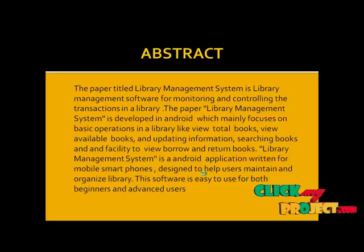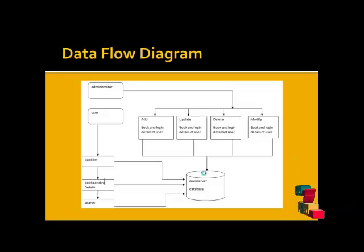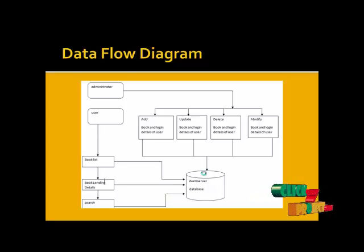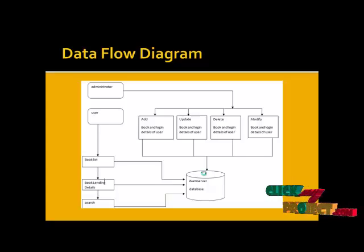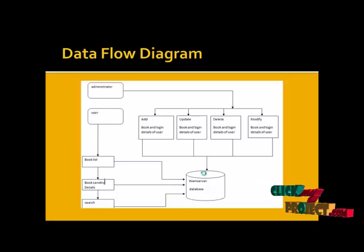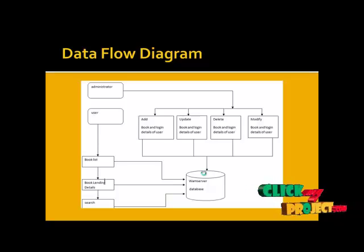Let's see the data flow diagram of this project. First, the user starts this application. The starting page contains a login page through which the user accesses the other modules of this project. The login function must succeed — if the login fails, the user cannot be permitted to access these functions.